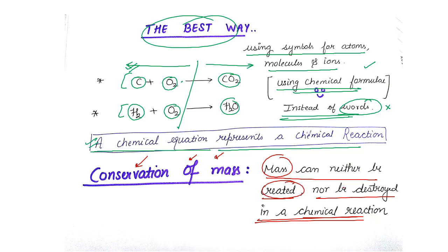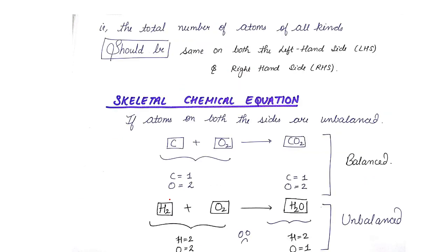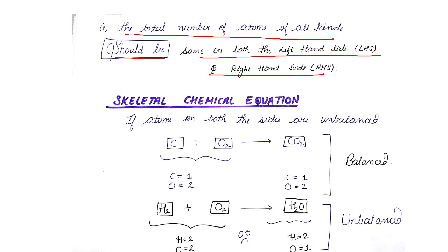Whatever the total mass of the reactants is will always be equal to the total mass of the products. In other words, the total number of atoms on the left-hand side should be conserved — the total number of atoms of all kinds should be the same on both sides of the equation. For example, let's look at C + O₂ → CO₂ and count the number of carbon and oxygen atoms on both sides.